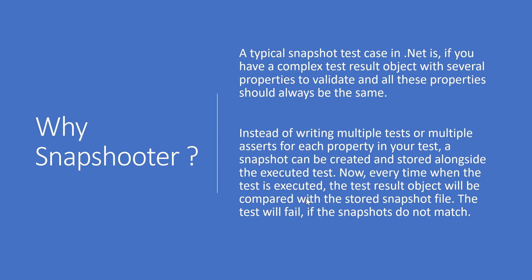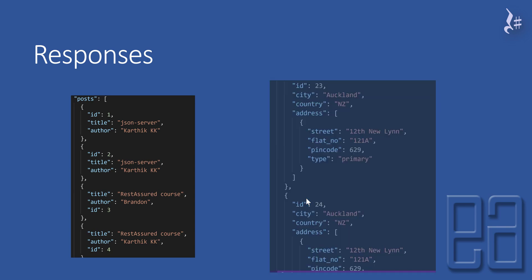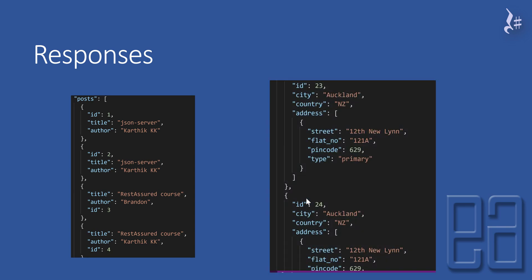Snapshooter is especially useful when working with a complex response object. In our course so far, we've dealt with a simple object and a slightly more complex one. In the first case — a post — we have only id, title, and author. It's very easy to validate those three properties; you can deserialize it or leave it as is. But if your response object has a more complex structure, like an address as an array type with its own properties, it gets more complex.